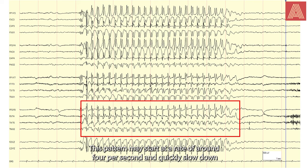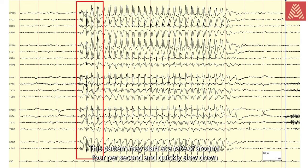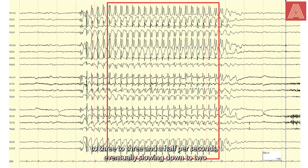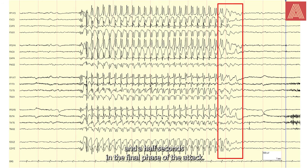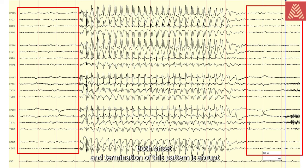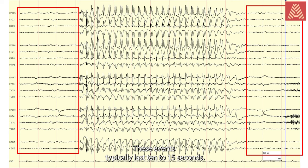This pattern may start at a rate of around four per second and quickly slow down to three to three and a half per second, eventually slowing down to two and a half seconds in the final phase of the attack. Both onset and termination of this pattern is abrupt and is likely to show normal EEG moments before and after the event. These events typically last 10 to 15 seconds.